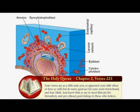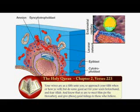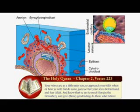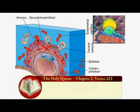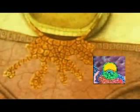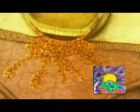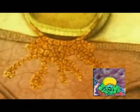Surah Al-Baqarah, ayah 223: 'Your wives are as a tilth unto you.' This Arabic term refers to the plowing of the earth and the sowing of the seed in it, and is used in reference to sexual intercourse — plowing and implantation of the blastocyst, and sowing of the seed.